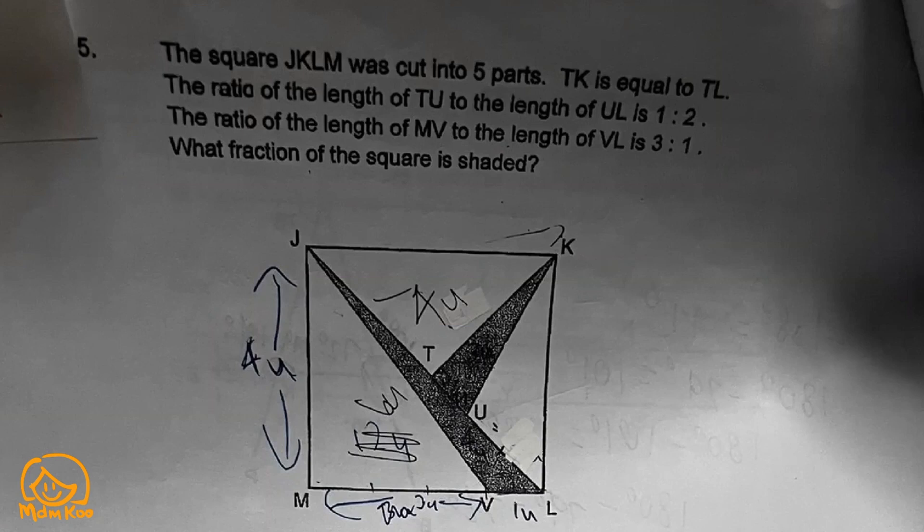In this question we have this square JKLM. It's a square cut into 5 parts. TK is equal to TL.